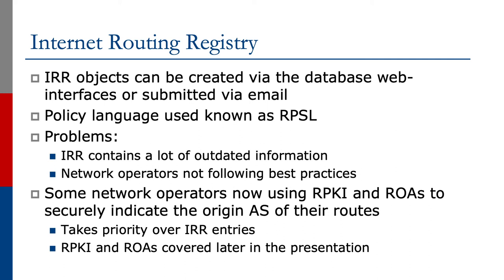In fact, some network operators are now using RPKI, which we'll look at later on in this series, and ROARS to securely indicate the origin AS of their routes. This takes priority over the IRR entries.